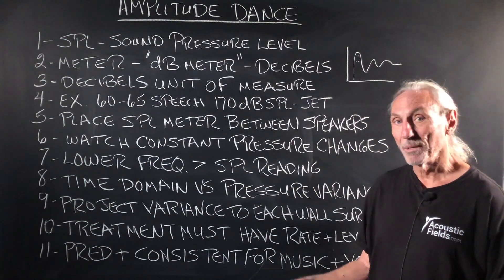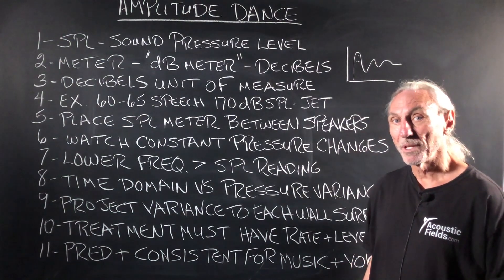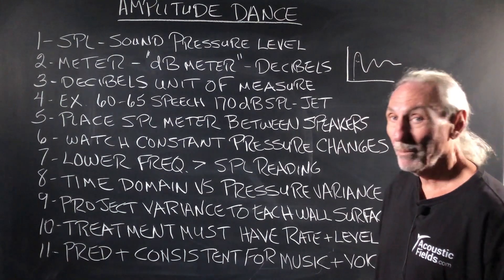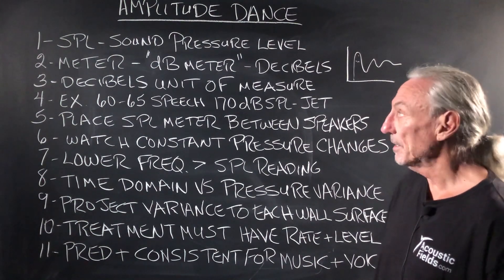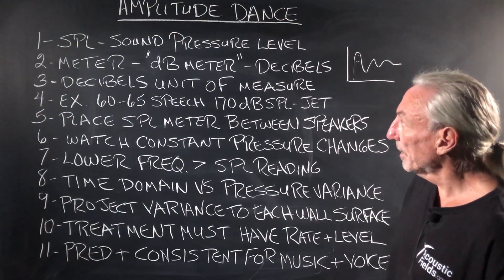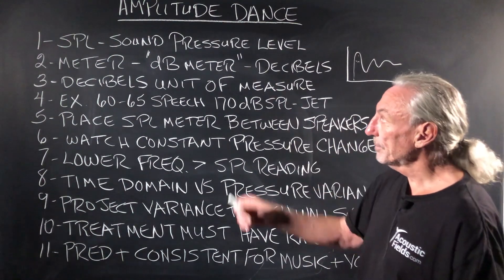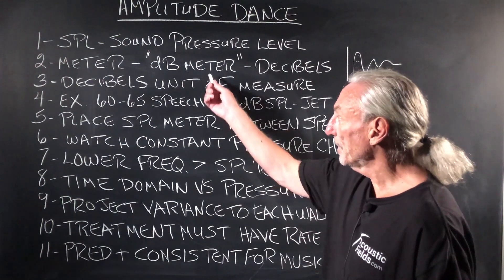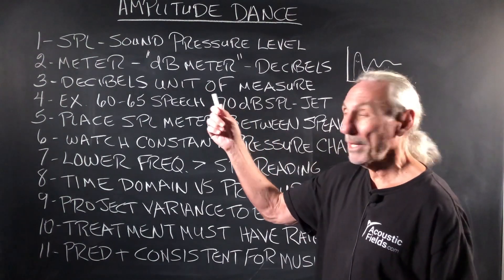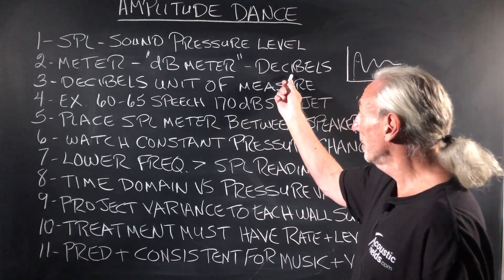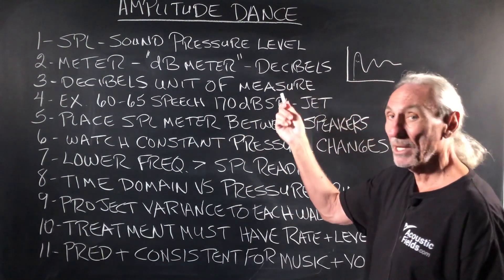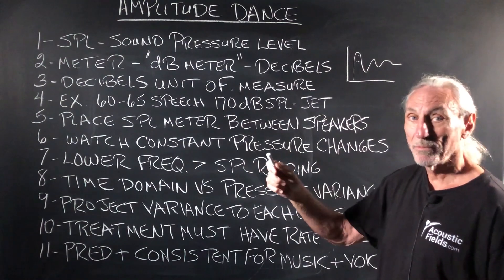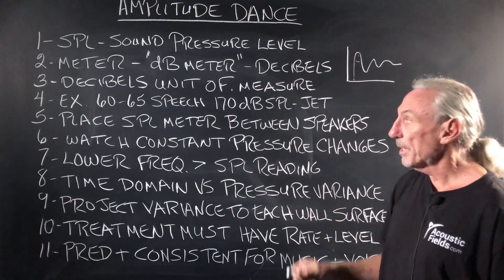You could get a real good feeling for what goes on in a room — probably make you dizzy in real time. So the sound pressure meter, or dB meter as a lot of people call it, measures decibels, which is a unit of measure of pressure.